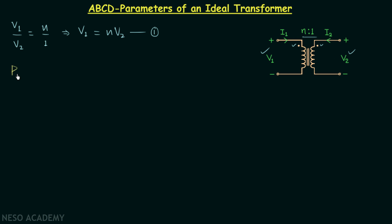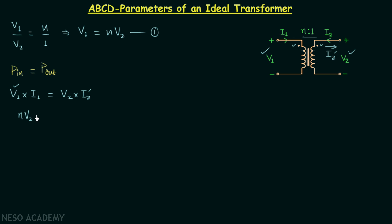In case of an ideal transformer there are no losses, hence the input power equals the output power. The input power is V1 multiplied by I1, and the output power is V2 multiplied by the outgoing current I2 prime. Substituting V1 = N·V2, we get N·V2·I1 = V2·I2 prime. Cancelling V2, we have I1 = (1/N)·I2 prime.